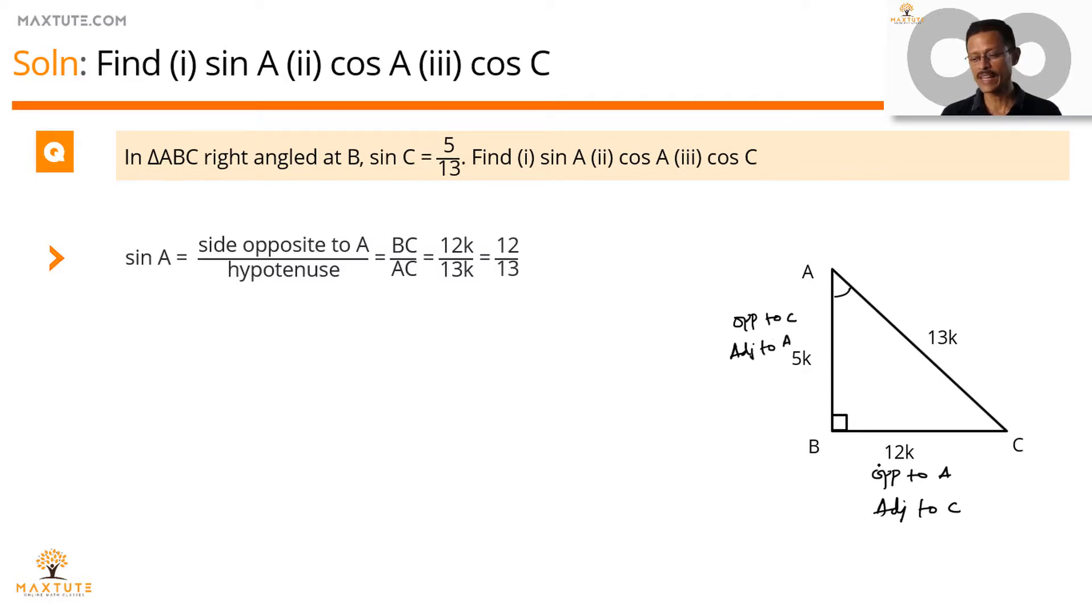So finding out sin A. Opposite to A is BC. Hypotenuse is AC. So which is equal to 12k by 13k which is equal to 12 by 13.